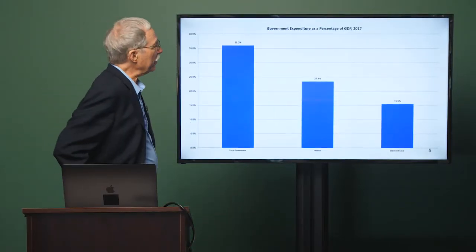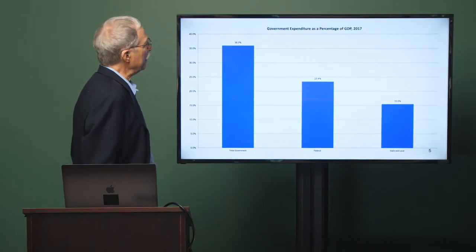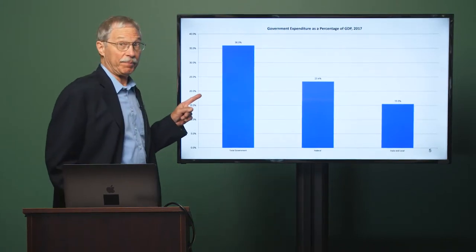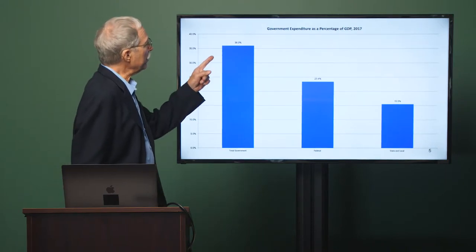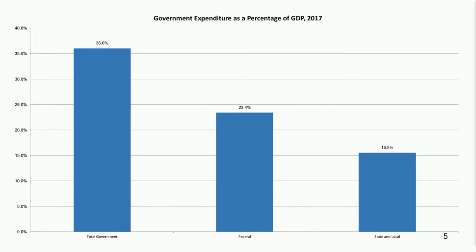This shows the broadest category — government expenditure or spending as a percentage of GDP — and that's how you get the big percentage. For total government, it's 36 percent of GDP for 2017, and most of that is federal at 23.4 percent versus 15.5 percent for state and local. Those quick at addition may notice that federal, state, and local add up to more than the total. That's because part of federal spending consists of transfers to state and local government, which are then counted again in state and local government spending when they spend the money they receive.